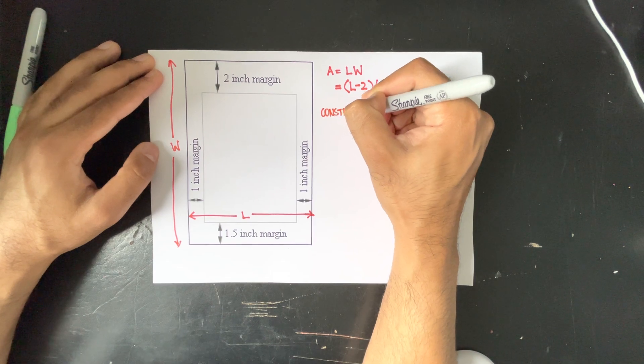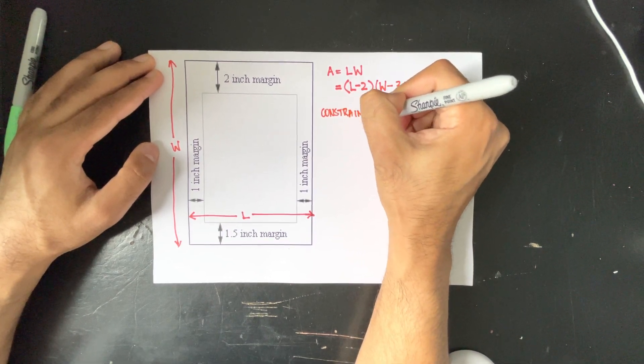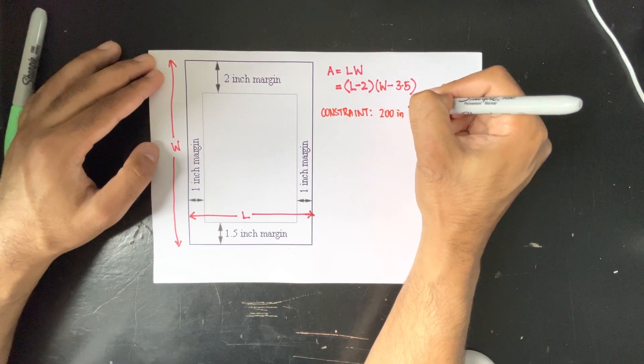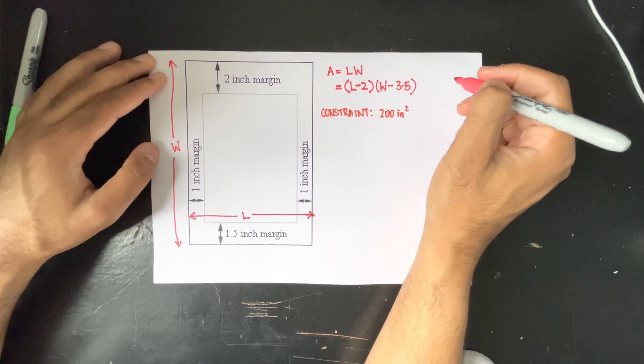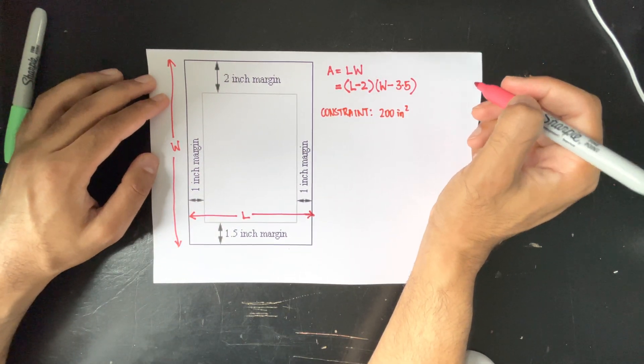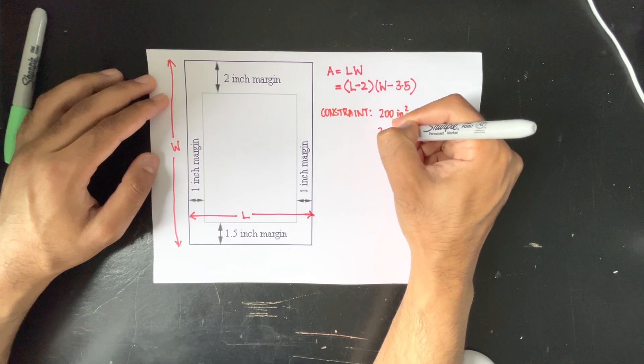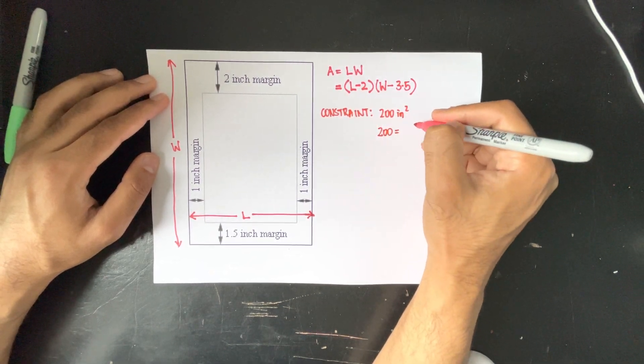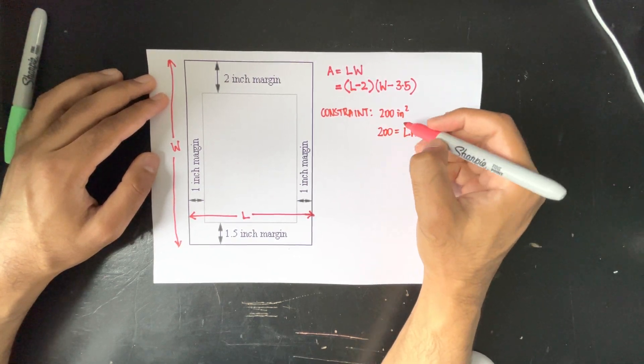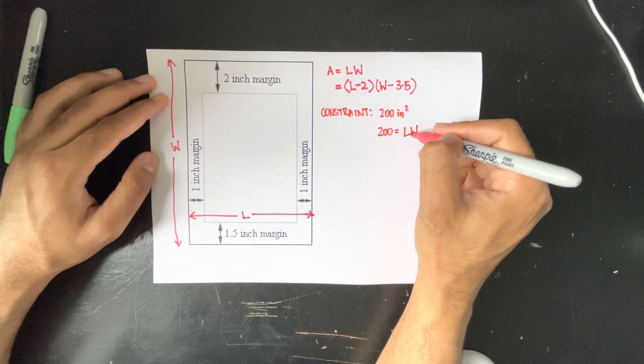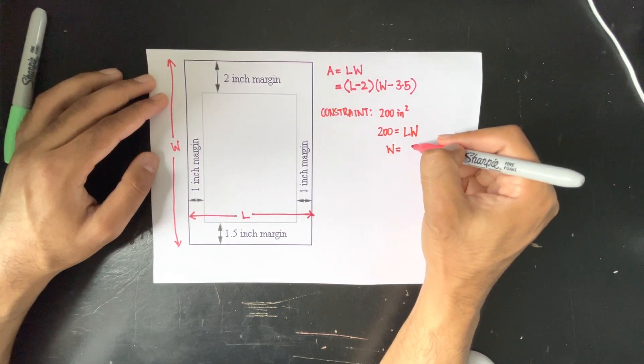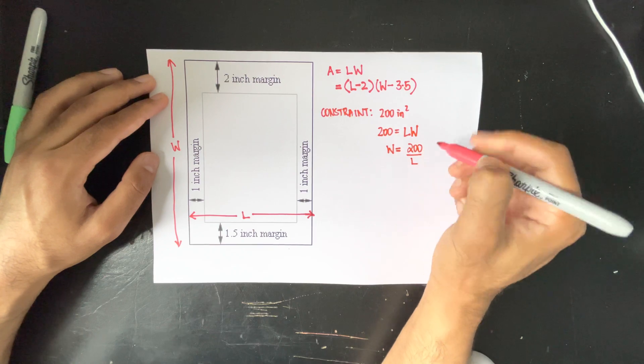So at its constraint we are given 200 inch squared of printing material or printing area and we know that 200 will be its length by width and we can solve for one variable. I'll solve for W leaving it to be 200 over L.